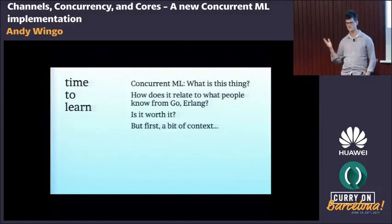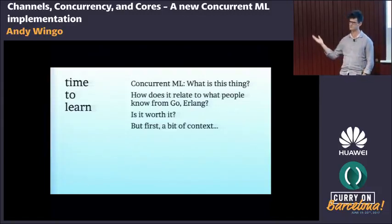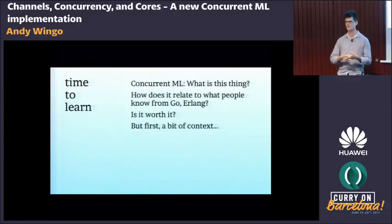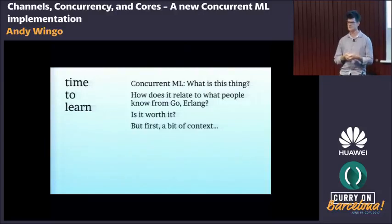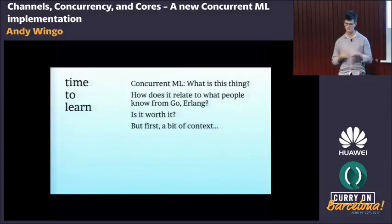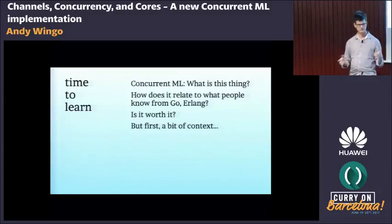This talk is about: what is Concurrent ML, how does it relate to communications primitives we might know from other languages like Go and Erlang, and is it actually worth it for you to implement it?